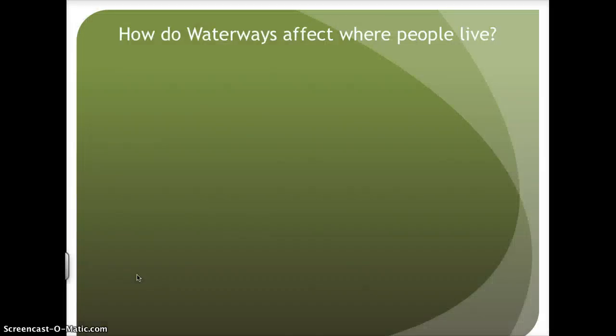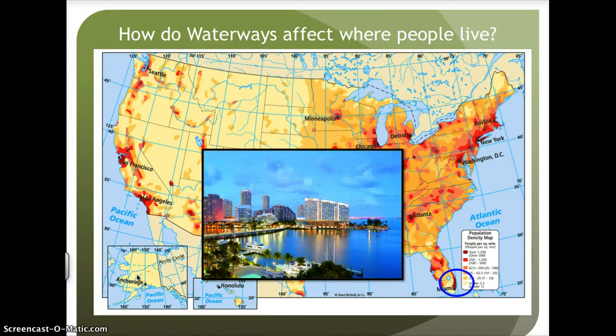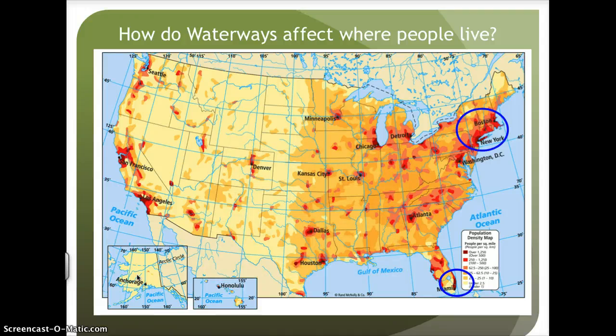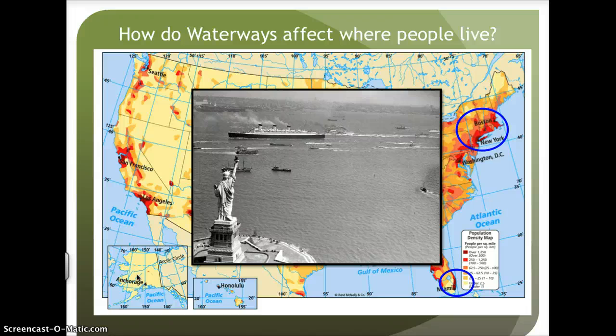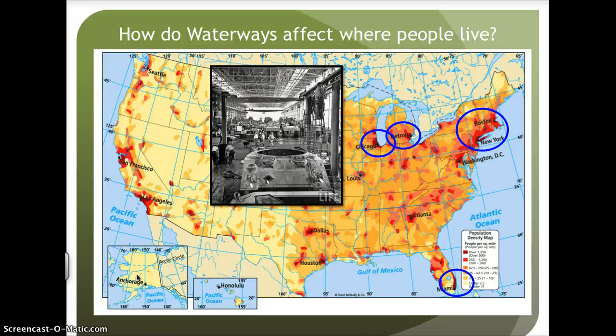Let's take a look at how waterways affect where people live using a population density map, which shows high or sparse concentrations of where people live. In the southeast, we have Miami, known as a large tourist attraction. Heading north, Boston and New York — Boston is known for its harbor allowing trade, and New York is known for its immigration from the 1800s and 1900s, including Ellis Island and the Statue of Liberty. Heading west, we have Detroit and Chicago, large manufacturing cities known for automobiles. Being located on the Great Lakes, it allows for easy trade and transportation.